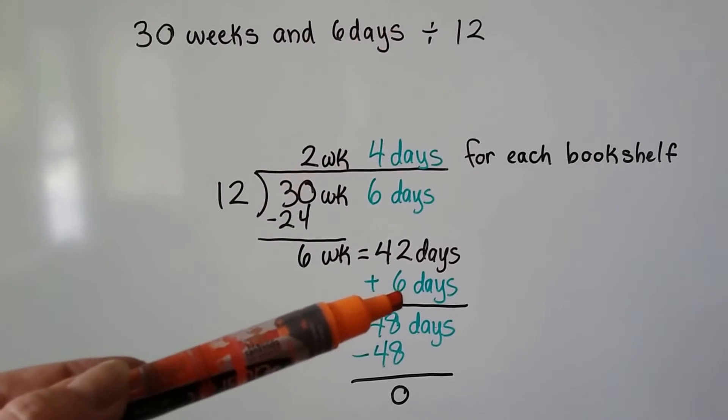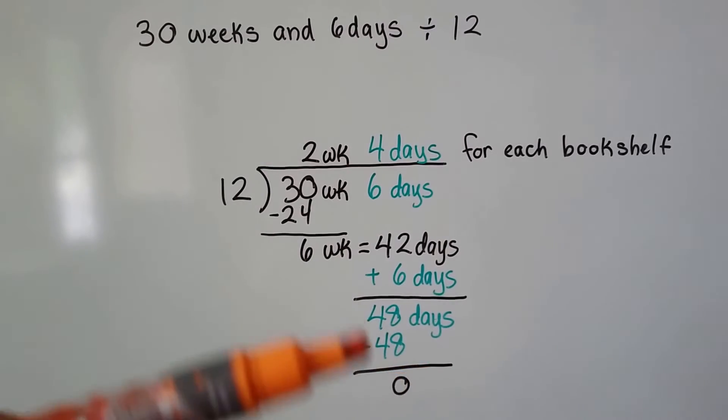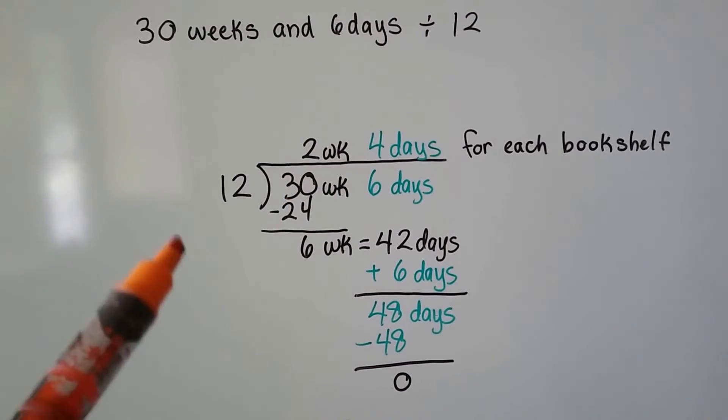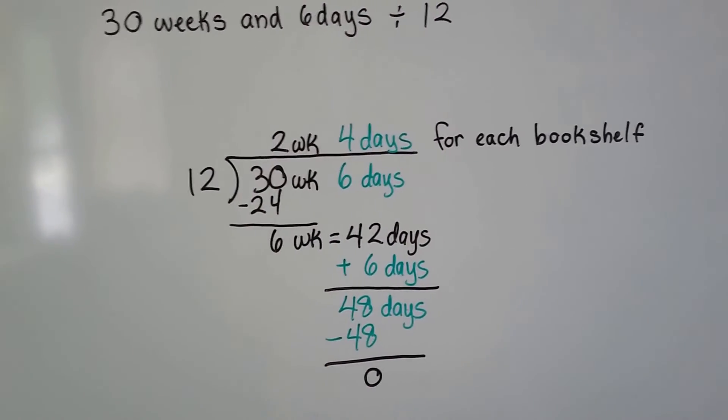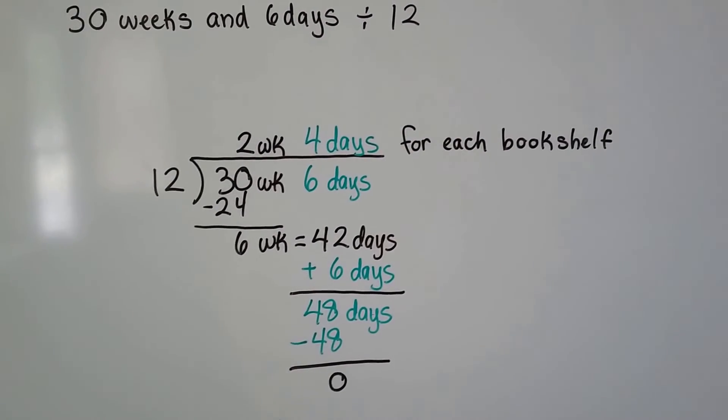Now when we drop down the 6 days and add them together, we get 48 days. 12 goes into 48 four times. 12 times 4 is 48. We get a zero remainder. So we know he's got 2 weeks and 4 days for each bookshelf.